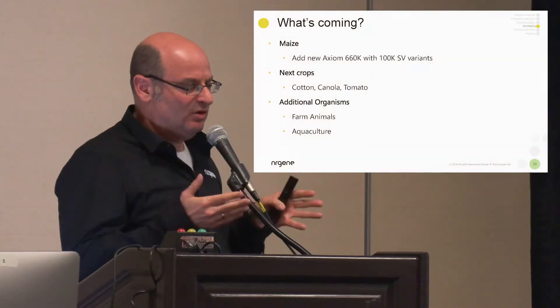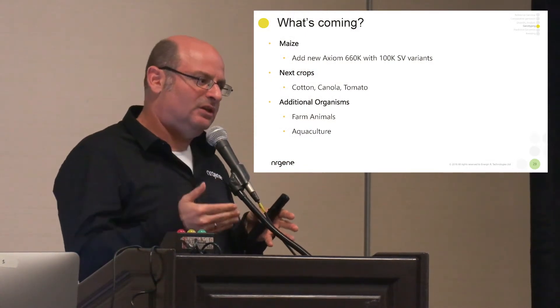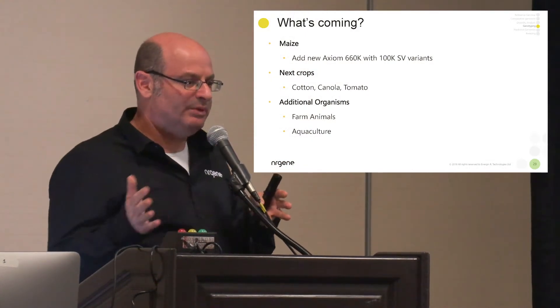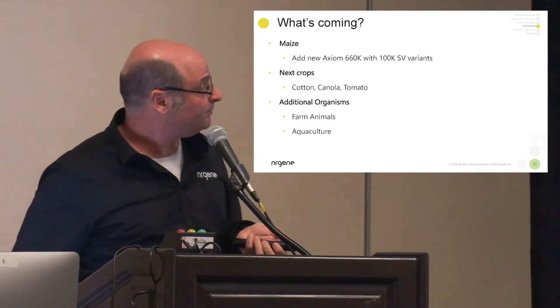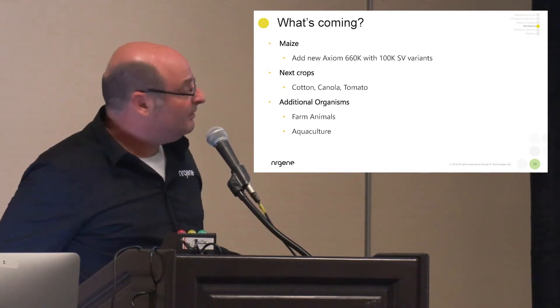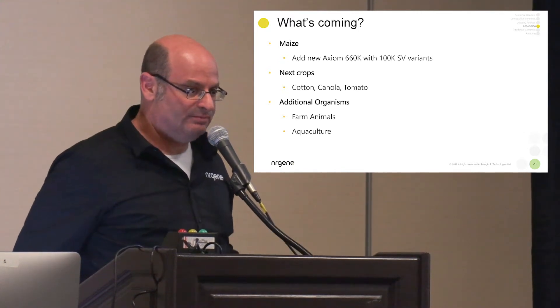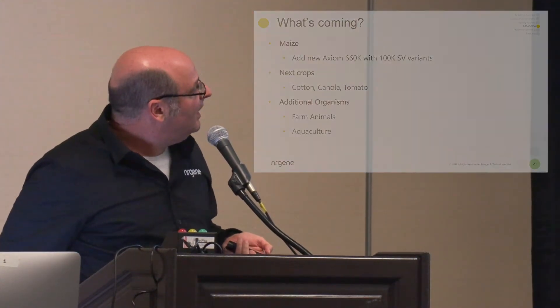Taking this sequence-based haplotype imputation approach to large scales, EnerGene is now offering this immediately in soy and maize. Cotton, canola, and tomatoes will be coming up very soon, and other organisms — including farm animals and aquaculture — will follow.